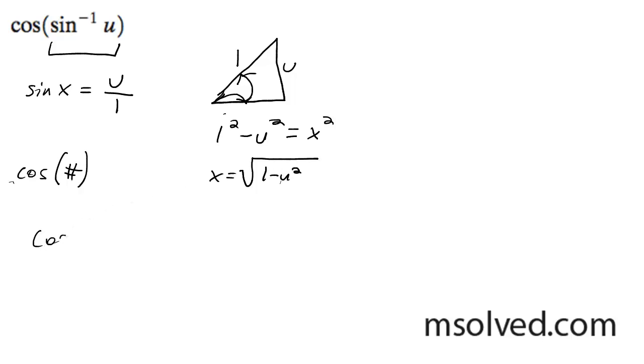So cosine, it's going to spit out the square root of 1 minus u squared over 1, which is just simply the square root of 1 minus u squared. That's it.